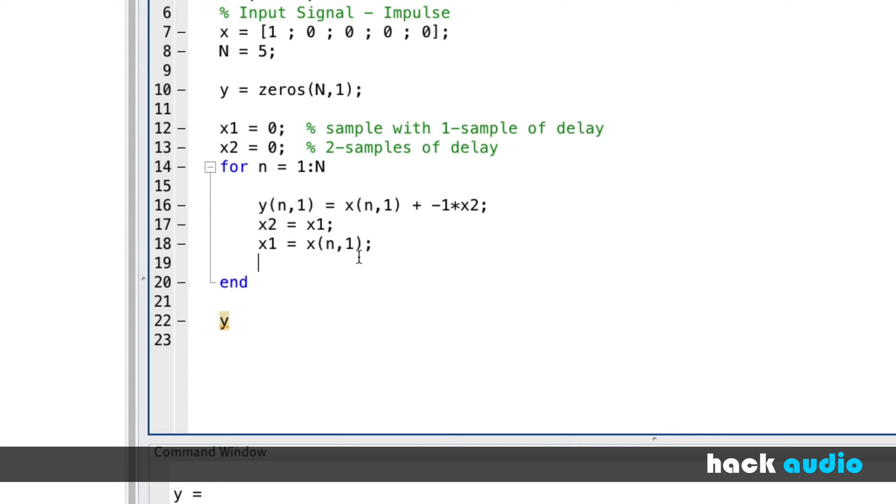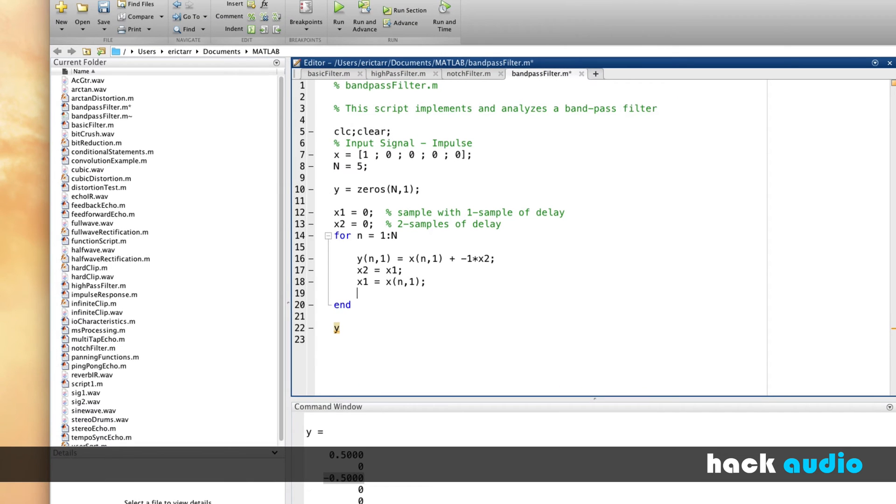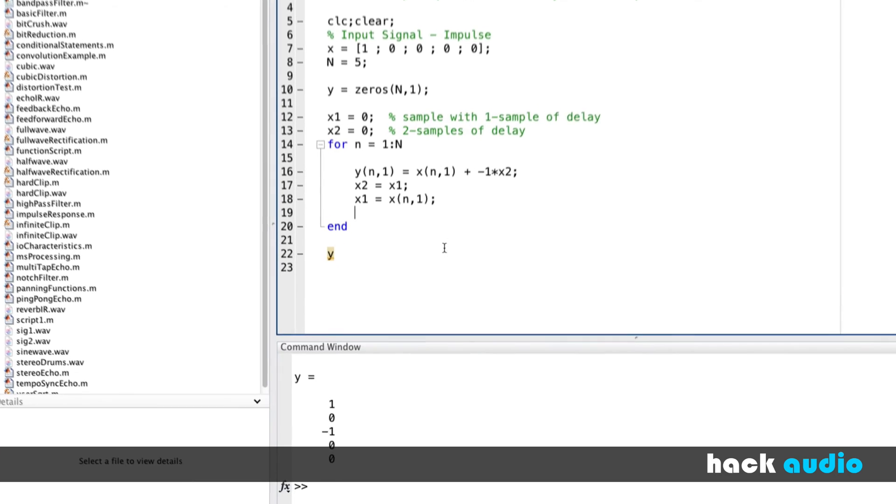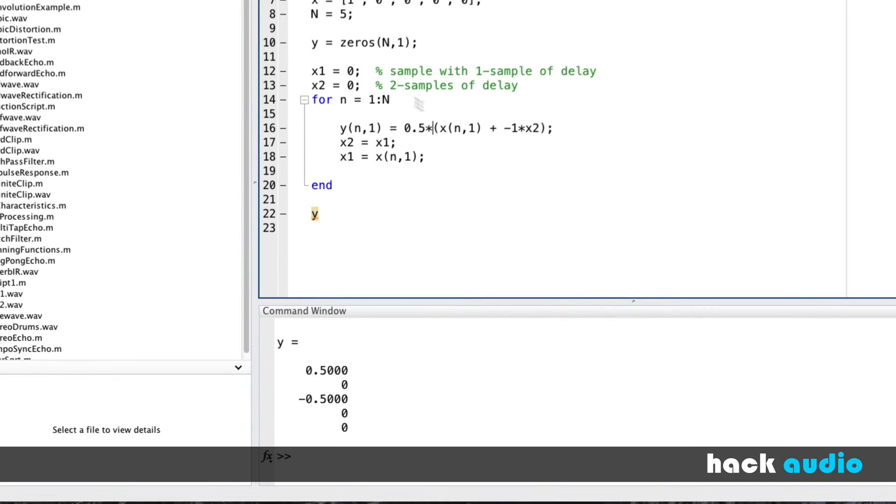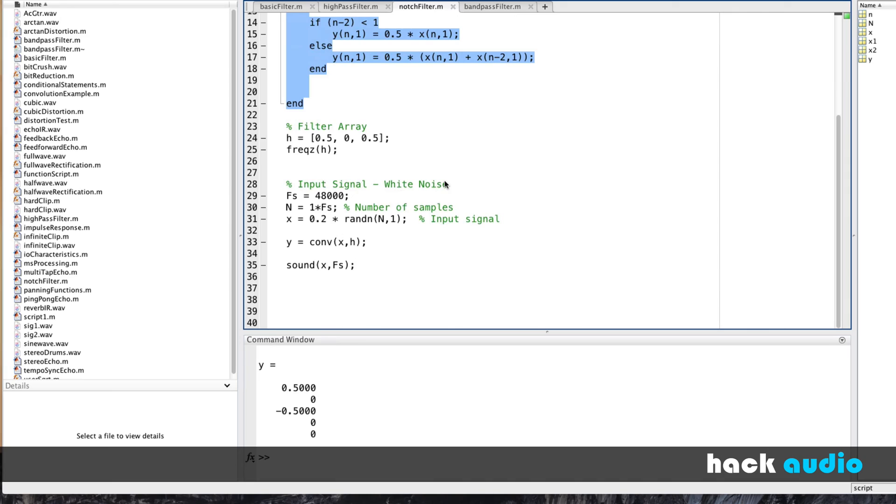So now what I can do is go ahead and print this, and we can look at the result down here and make sure everything is working correctly. So this time we had 1, 0, minus 1. So the only difference from what we had before is we need to multiply the whole thing by 0.5. That keeps our unity gain across everything. This is just another way to implement the exact same thing.